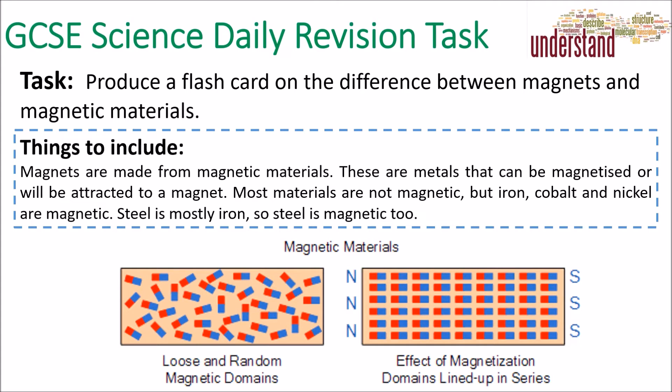When they're all jumbled up — loose and random — then the material will not be magnetic. However, if they're magnetized, all the magnetic domains line up and the magnet will have a north and a south end.